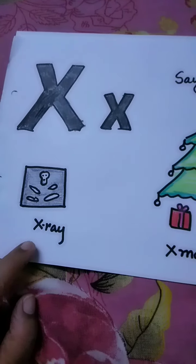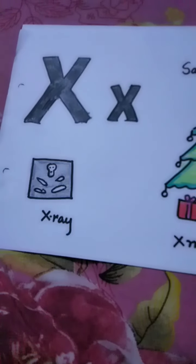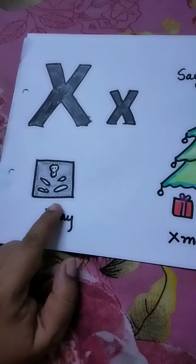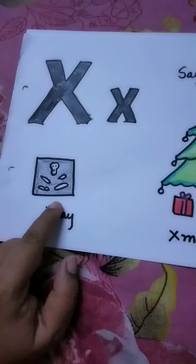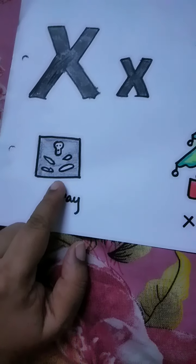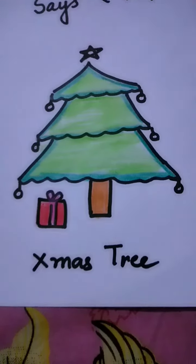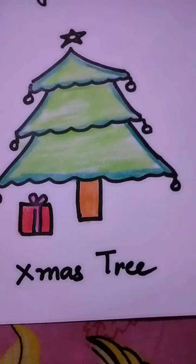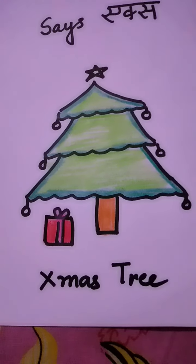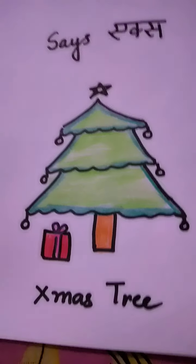X — X-ray. Whenever someone gets hurt and you break a bone, you go and get an X-ray done. That is seen by doctors to find out where the injury is. And what is this? Christmas tree — also called Xmas tree. Christmas tree is decorated at Christmas time. Very good, shabash.